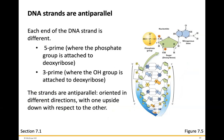Each strand of DNA is anti-parallel. Each end of the DNA strand is different. You have the 5' end, where the phosphate group is attached to the deoxyribose, and the 3' end, where the hydroxyl group is attached to the deoxyribose. The strands are oriented in different directions, with one upside down with respect to the other, as shown by the arrows in the picture.